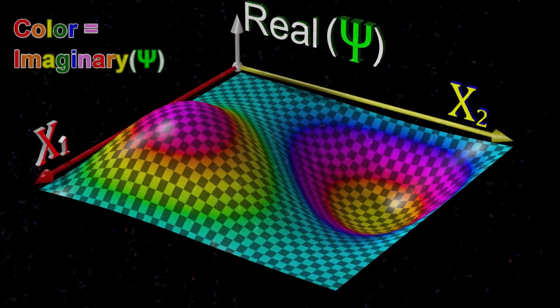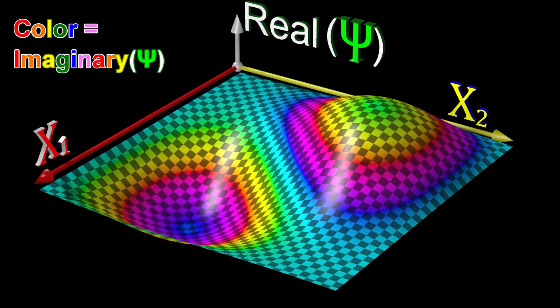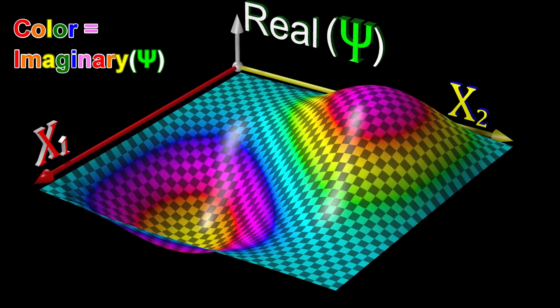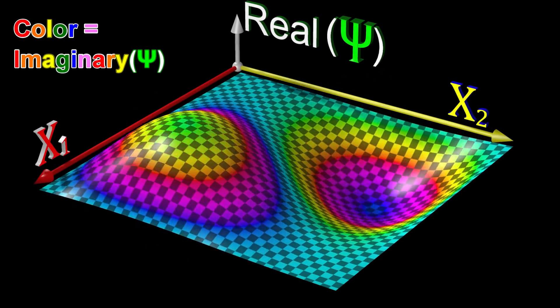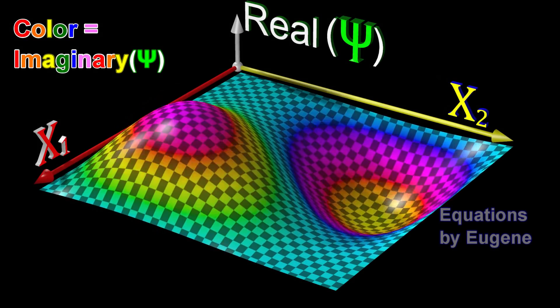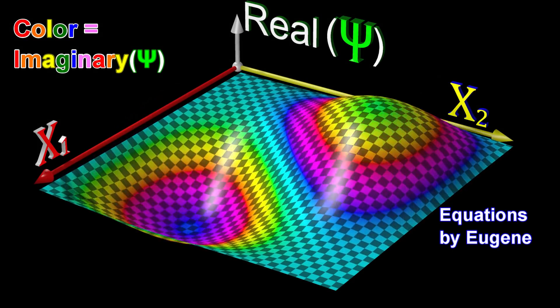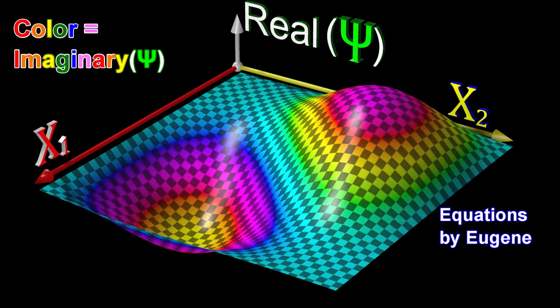Inside the animation program, you can also define the texture, offset, and transparency of a material using mathematical equations that you define.